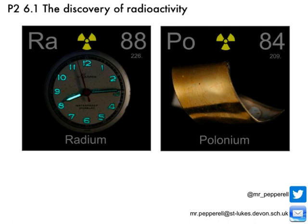Unfortunately for Curie, her continued exposure to radiation during her work caused her to develop leukemia — a disease of the blood cells — in later life, and that's what she died from in 1934. The Marie Curie cancer shops you see on the high street today are there to raise money for people who suffer from leukemia. And that is the discovery of radioactivity — the work of Henri Becquerel and Marie Curie.